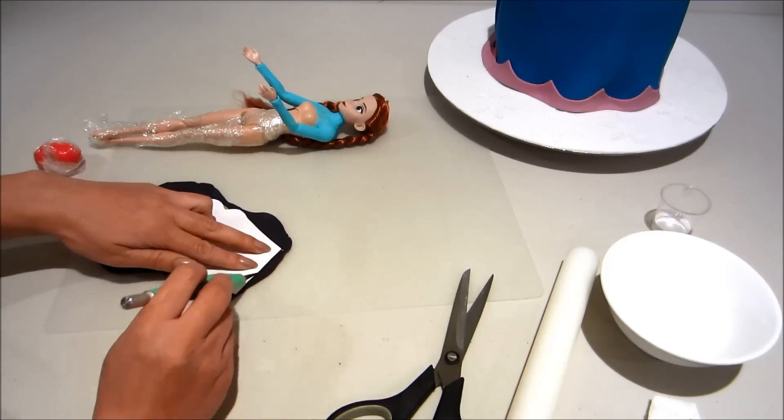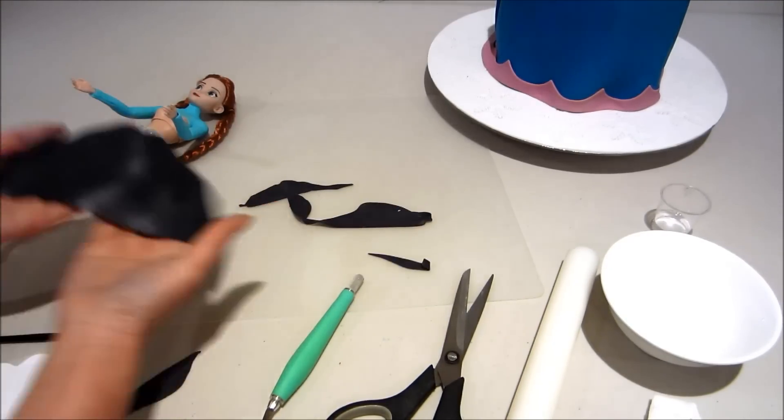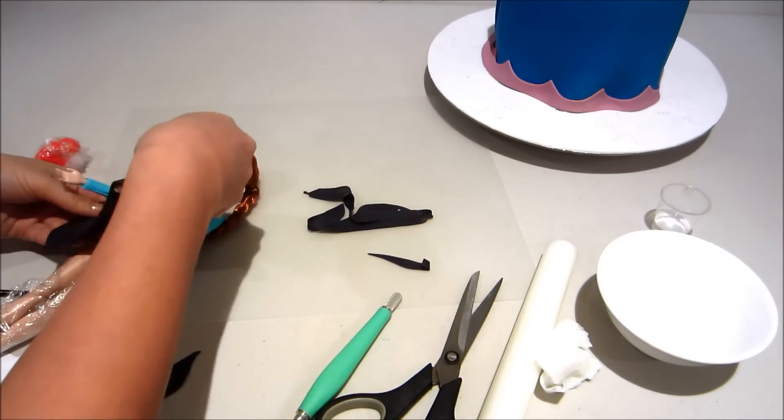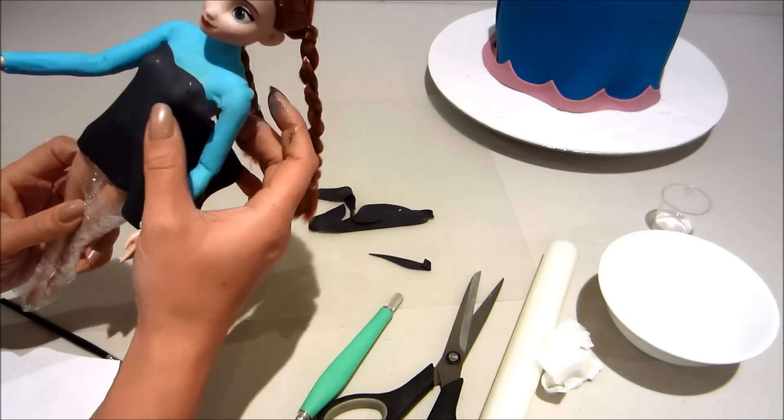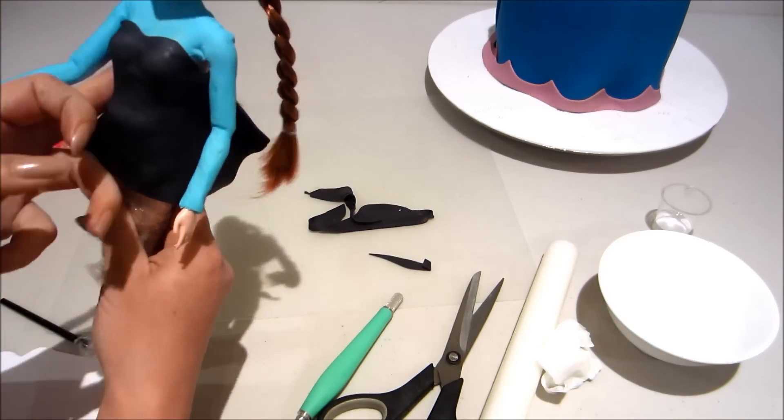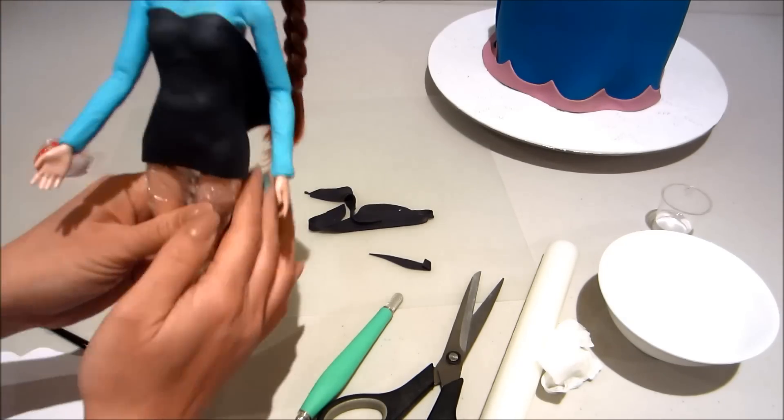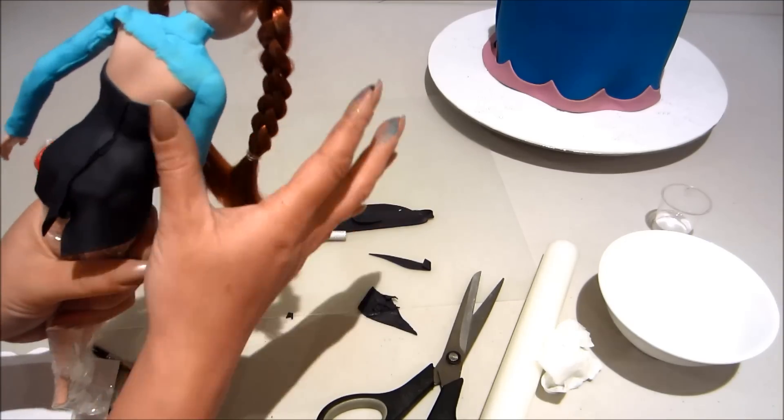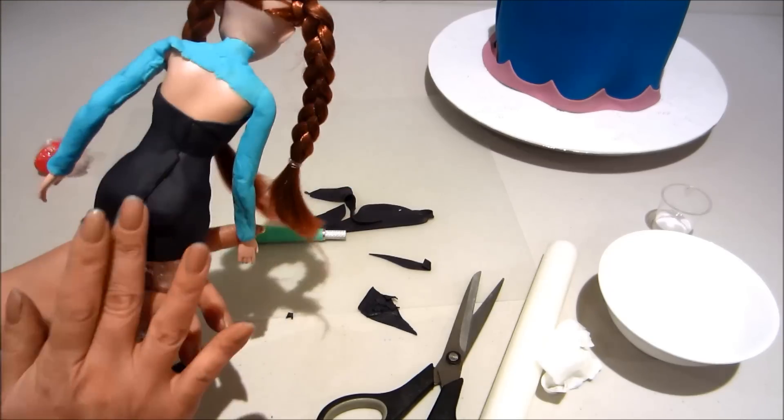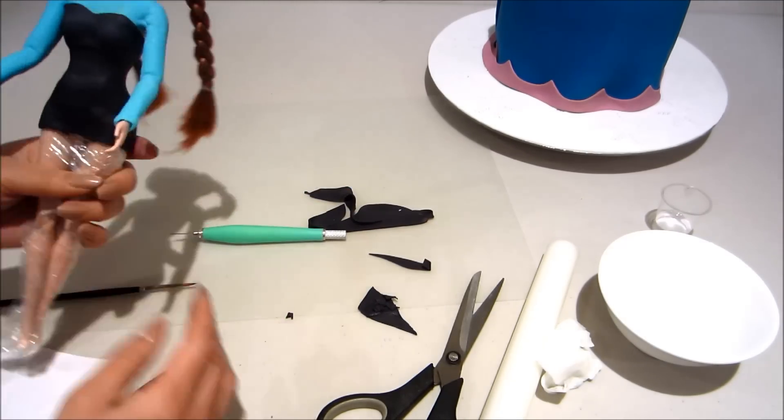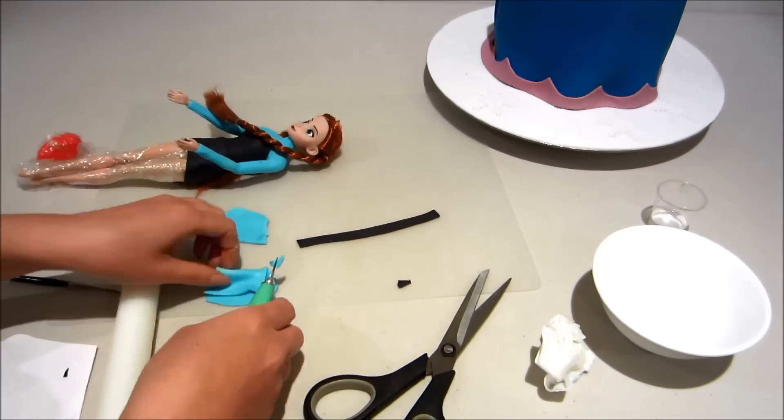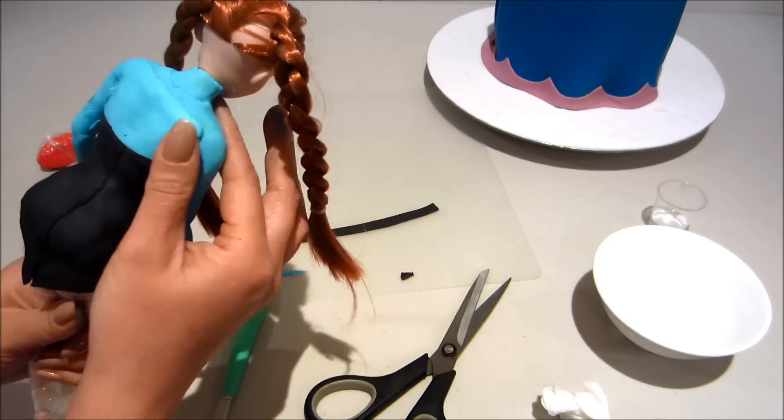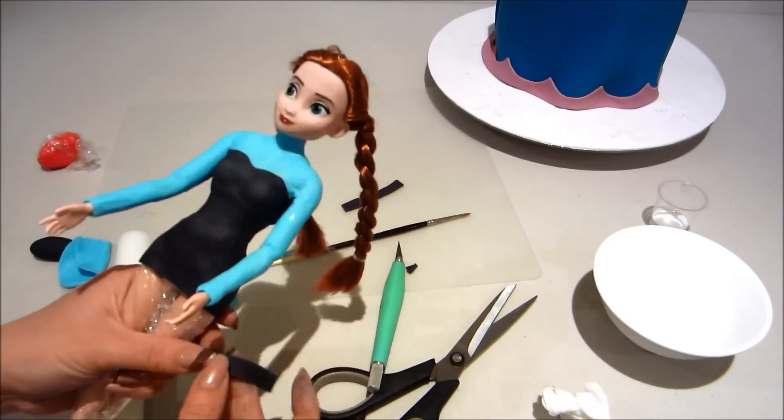Now onto some black fondant. I'm using a little template. Now I'm just wetting the back and then attaching the black portion onto the doll, gently pressing in and smoothing down, and cutting the excess off with my knife. Okay now there's a little bit exposed at the back so I'm just cutting out a tiny portion of blue fondant and gluing it on just to cover that section there. Gently pressing in. Now attaching a little black strip to the shoulders.